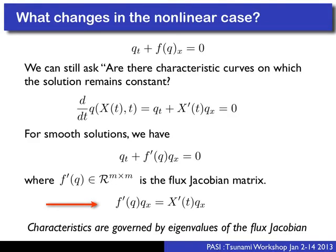We can still ask whether there are characteristic curves along which the solution remains constant. Applying the chain rule, d/dt of Q(x(t)) = 0 requires F'(Q)*Q_x = x'(t)*Q_x, meaning x'(t) must be an eigenvalue of the flux Jacobian. For 1D shallow water, it's a 2×2 matrix and we can easily compute eigenvalues and eigenvectors. They look similar to the linear case, except eigenvalues now depend on u and h, and eigenvectors involve u — that's the crucial difference.